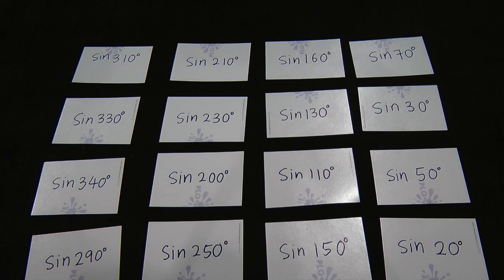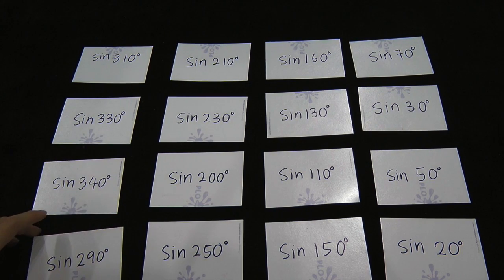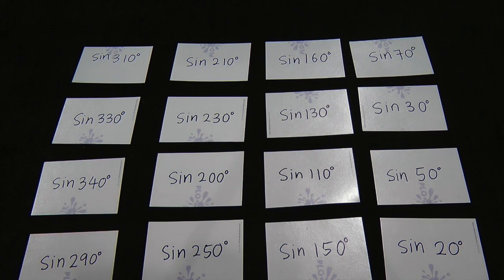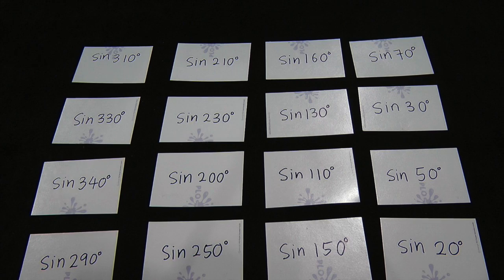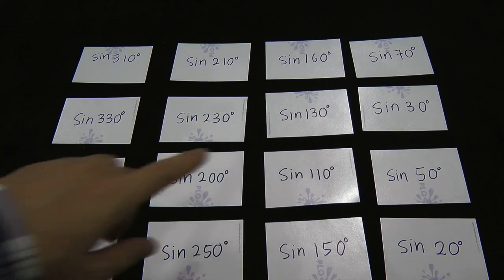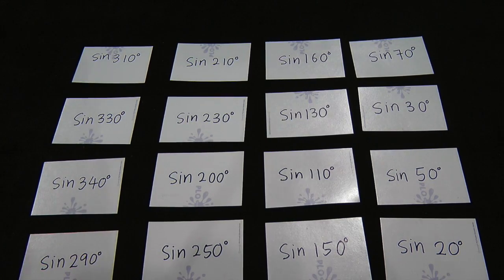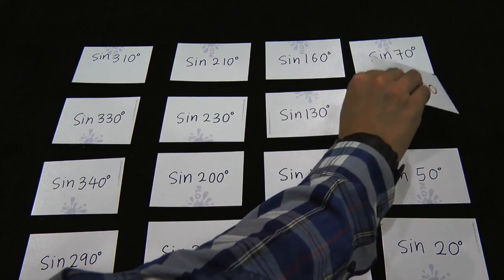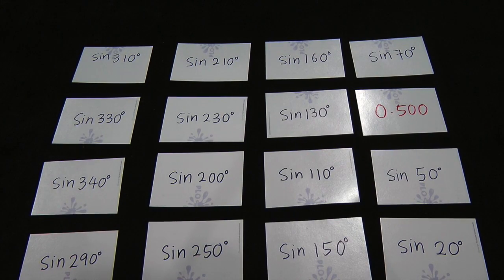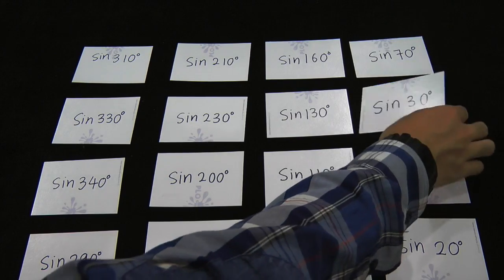I'm not asking you to just practice pressing the calculator — I want you to understand the relationship, so you can do this without a calculator. For example, I know sine 30 equals 0.5. So when I pick that card, I get 0.5. Then I have to think: in the second quadrant, which angle will give me the same value as sine 30?